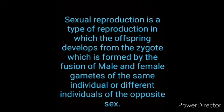What is sexual reproduction? It is a type of reproduction in which the offspring develops from a zygote, which is formed by the fusion of male and female gametes of the same individual or different individuals of the opposite sex.